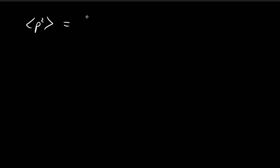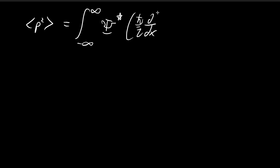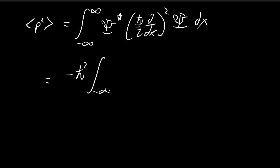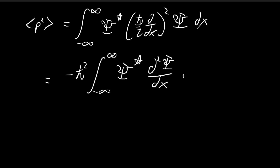Starting off with the expected value of p squared, which is what we're trying to find, we apply the definition: it's equal to the integral of the conjugate multiplied by the momentum operator squared applied to the wave function. Pulling out the constants, we have the conjugate multiplied by the second derivative of the wave function.